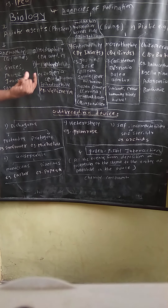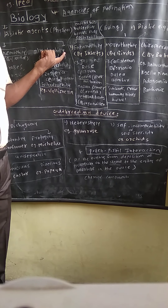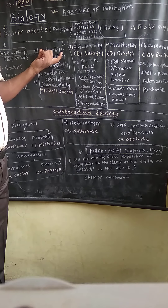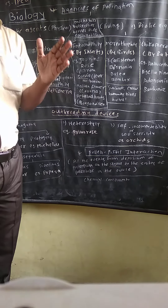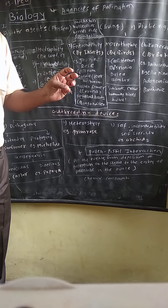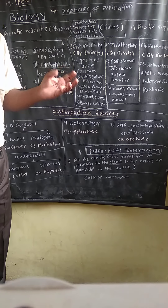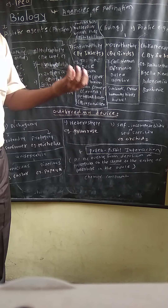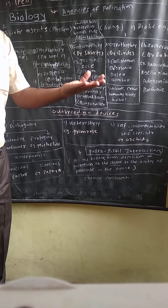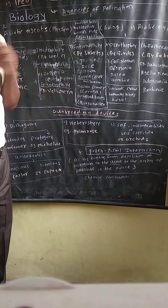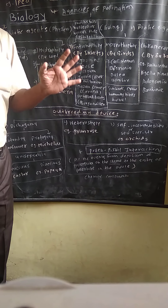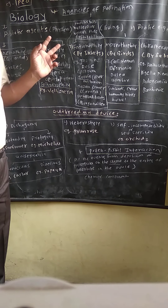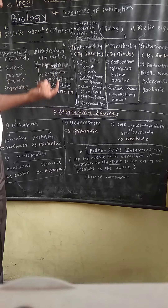Second is hydrophily — 'hydro' means water. Pollination that occurs by water is called hydrophily. These flowers are also without fragrance and without nectar. Pollen grains are very small. Perianth is absent or only the inner whorl is present. Specific gravity is maintained, and pollen grains are unwettable. Floral parts are also unwettable — this is a peculiar characteristic of hydrophilous flowers.